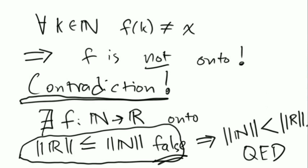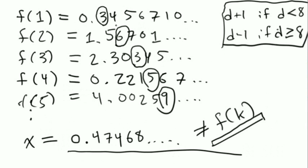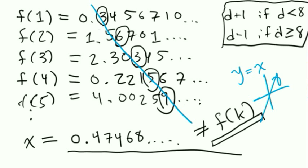That proof is a little tricky, so I really suggest you look at the picture and try to convince yourself why the number x cannot possibly be in the list, no matter what the list is. Notice there's a diagonal line here — that diagonal is why this is called Cantor's diagonalization argument. We look at the kth digit of the kth number, and if you think of y = x as a graph, it's a diagonal line. This really changed math, because before then people didn't think of infinity as something you could prove things about.